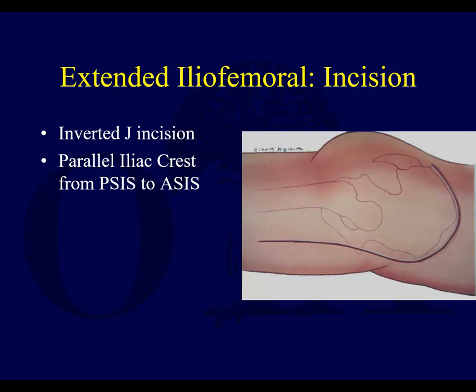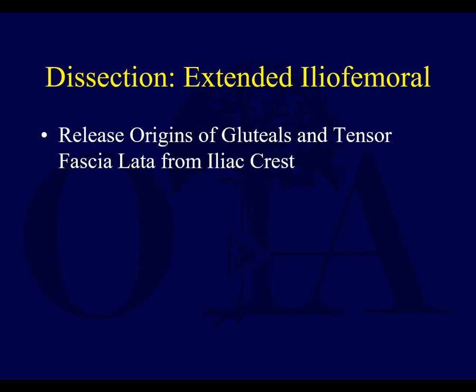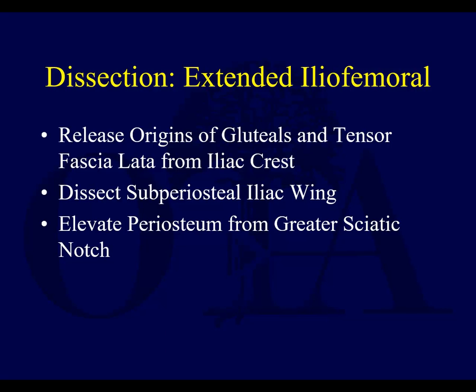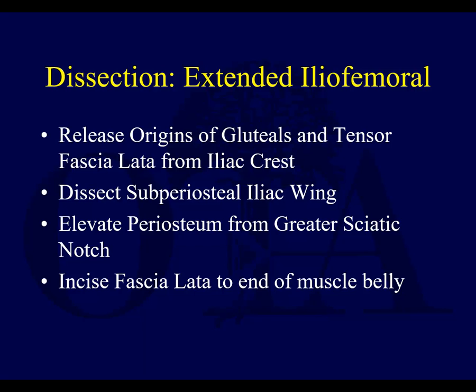The incision goes parallel to the iliac crest from PSIS to ASIS, and then along the anterior thigh. You release the origin of the gluteals and tensor fasciae latae from the iliac crest — basically taking all the abductors and the tensor muscle off of the iliac crest. You subperiosteally dissect the iliac wings, exposing the entire outer table. You go all the way around towards the greater sciatic notch, then incise the fascia latae to the end of the muscle belly.